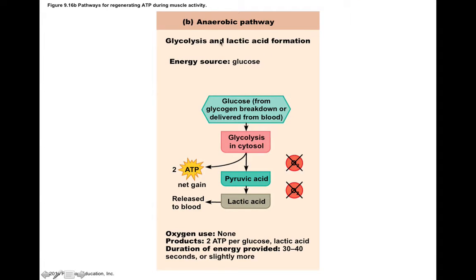To summarize glycolysis as an anaerobic pathway: glucose breakdown in the cytosol or sarcoplasm yields a net two ATP molecules per glucose, and none of these reactions require oxygen. Pyruvic acid, when it builds up, must be converted to lactic acid for the process to continue. This lactic acid is transported into the bloodstream and utilized by other organs. This provides enough ATP for approximately the first 30 to 40 seconds of muscular activity.